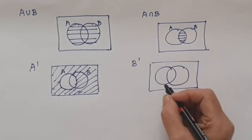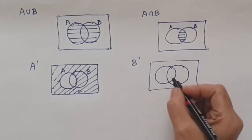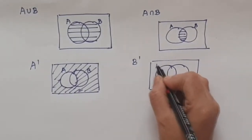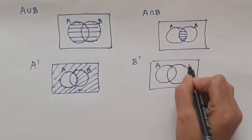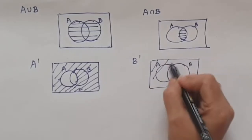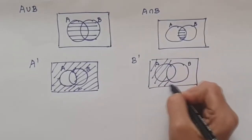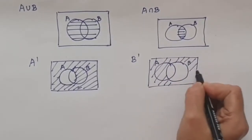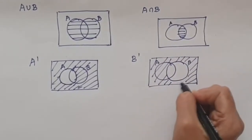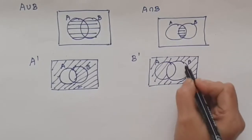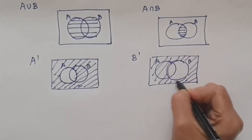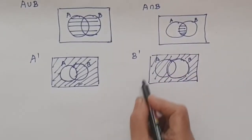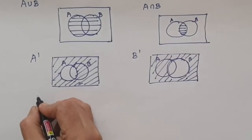In the same way, if we need to shade B complement, we just leave out circle B alone and shade the rest. Even the common region — that is not a problem. Circle B alone we leave and shade the rest of it; that is called B complement.